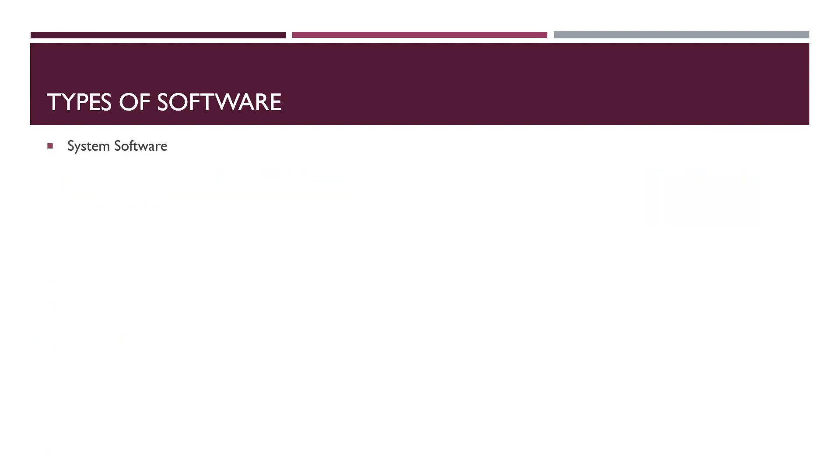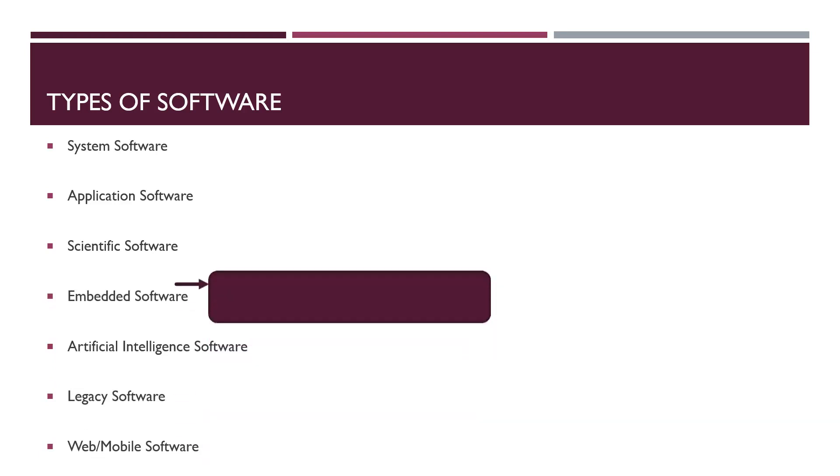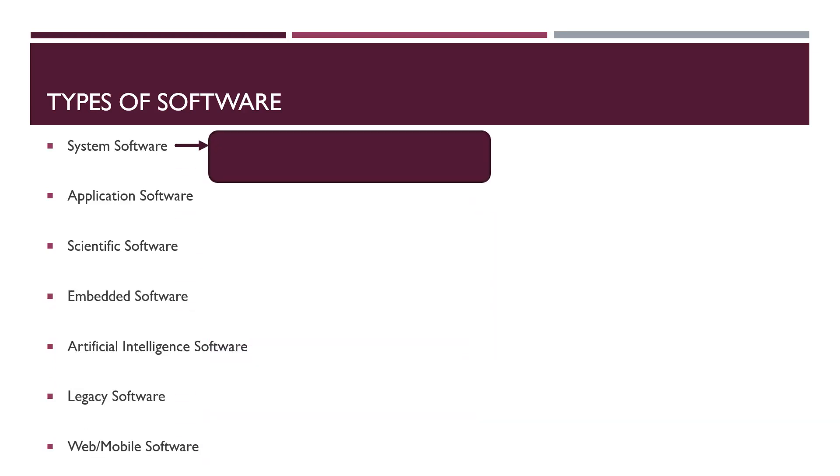Now, we will discuss different types of software. First, the system software. System software are those software that provides some platform to the other softwares for execution. Example of system software is operating system. Operating system provides platform to run other programs. Compiler is one more example of system software.